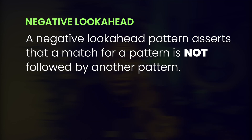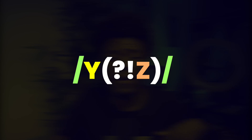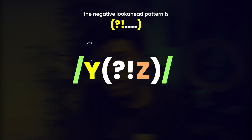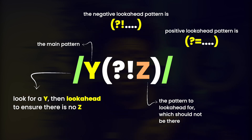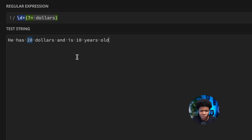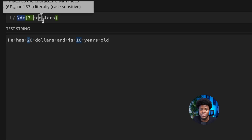What we've seen so far is a positive look ahead — we look ahead of a string to check if it is followed by another string, and if it is, the match is valid. We also have negative look ahead, which is the opposite: return this match if it is NOT followed by the specified pattern. The syntax for negative look ahead is Y(?!Z) — using a question mark and exclamation mark instead of question mark and equal sign.